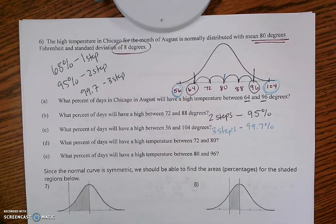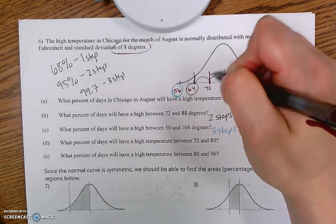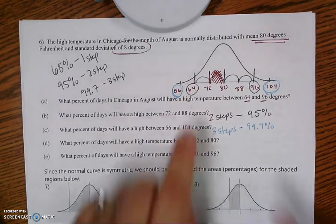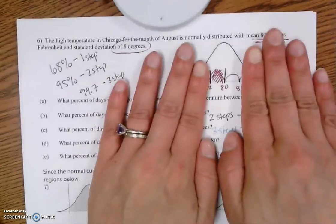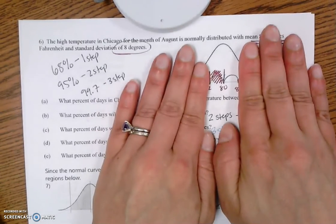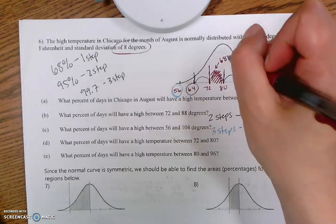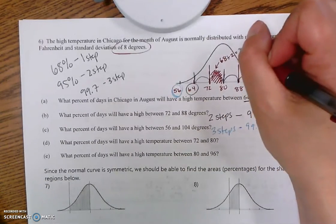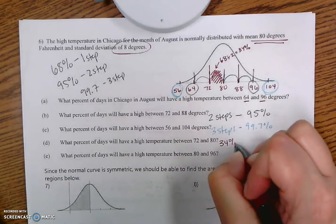What percentage is in between 72 and 80? Here's where you have to put your thinking cap on. If I go one step in both directions I would cover 68%. So if both sides together equal 68%, but I've only gone down one and haven't gone in both directions, I've done half of 68%. Half of 68 would be 34%. The other 34% is on the other side, which I haven't counted. So 34% would be in between 72 and 80.